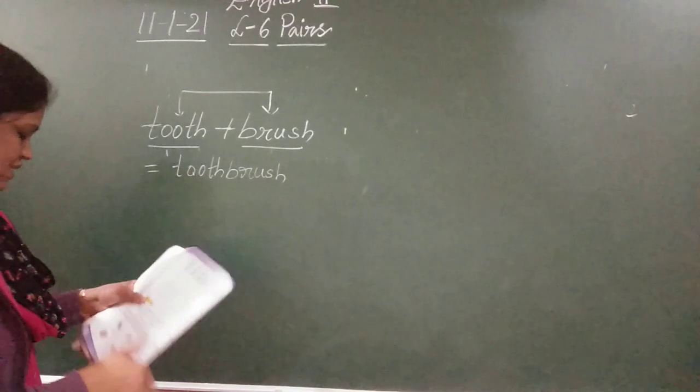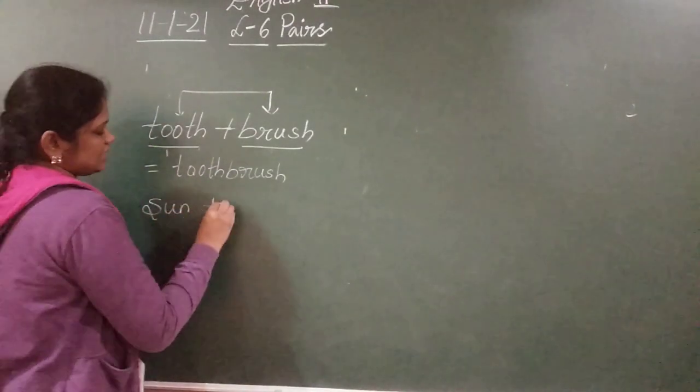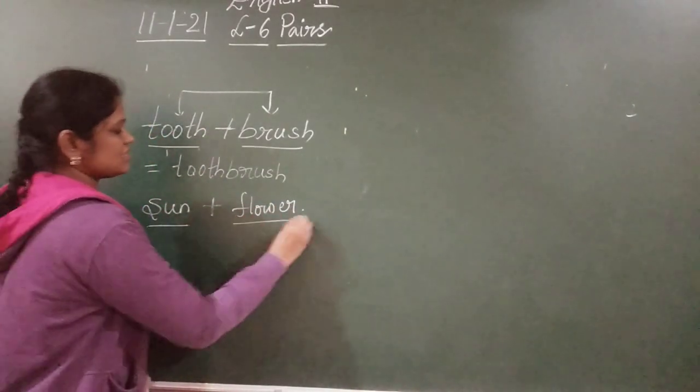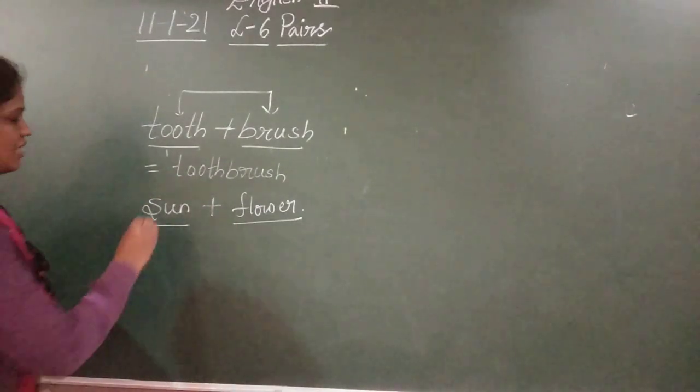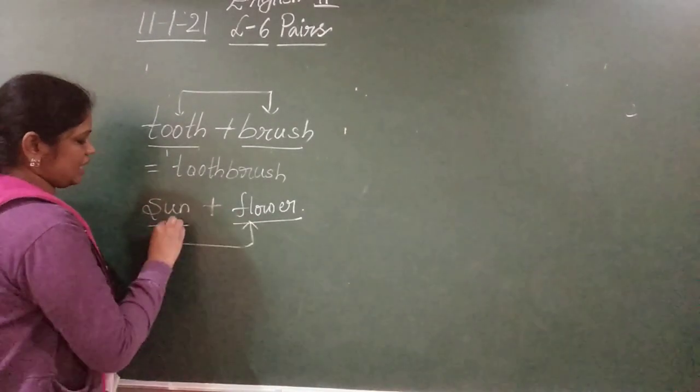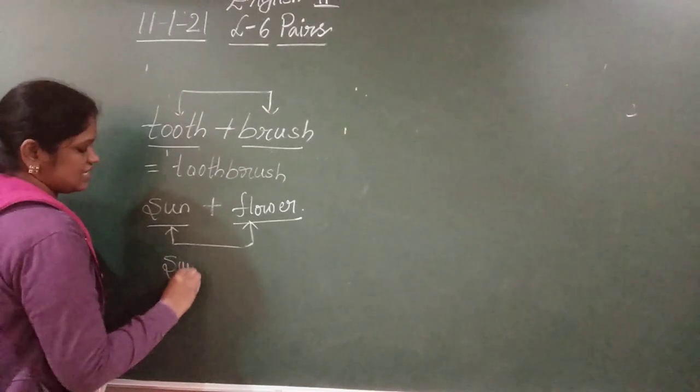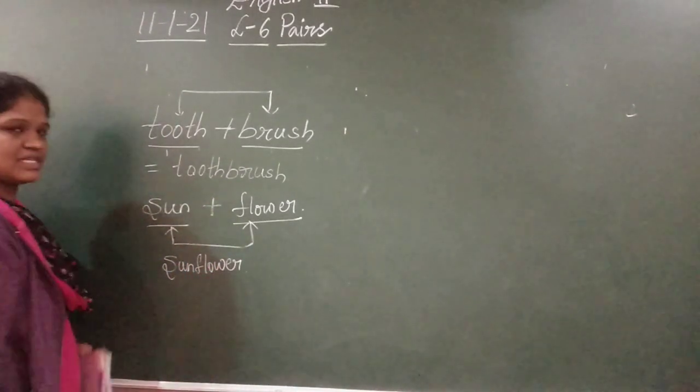And next, sun plus flower. Two different naming words, right? Sun plus flower. If you add these two naming words, you will get one naming word. What is that? Sunflower. Sunflower is a flower, it is a naming word.